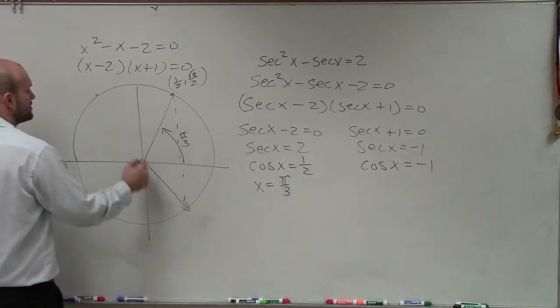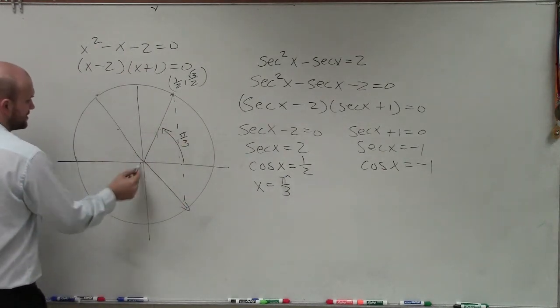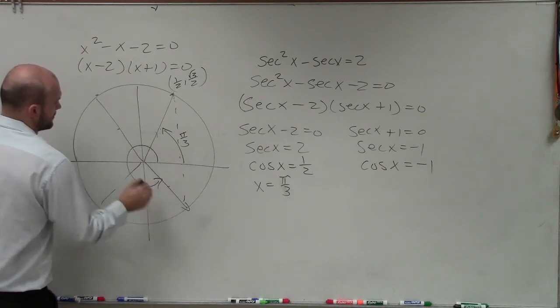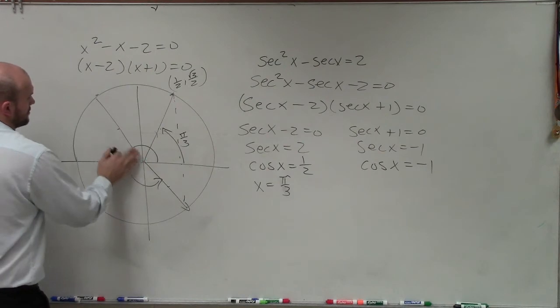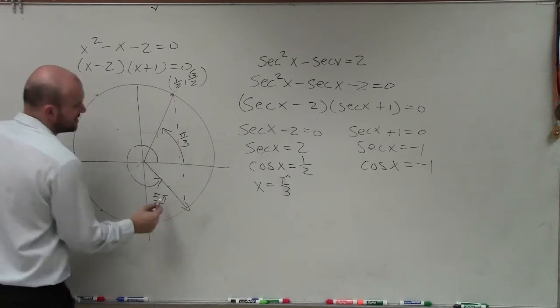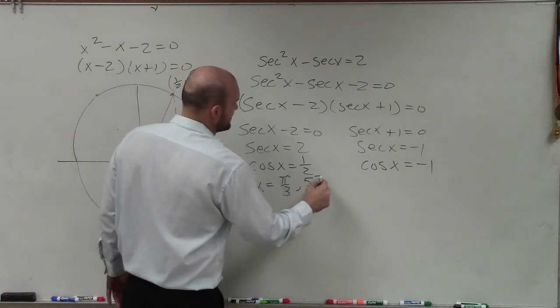So if this is pi over 3, that'd be 2 thirds, 3 thirds, 4 thirds, 5 thirds. So my two solutions right now is pi over 3 and 5 pi over 3.